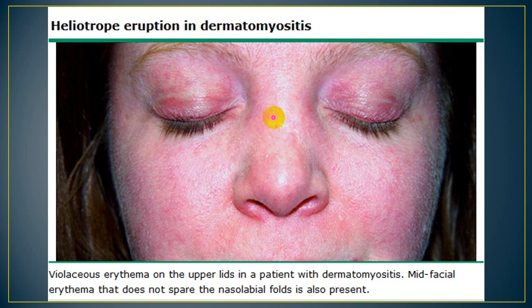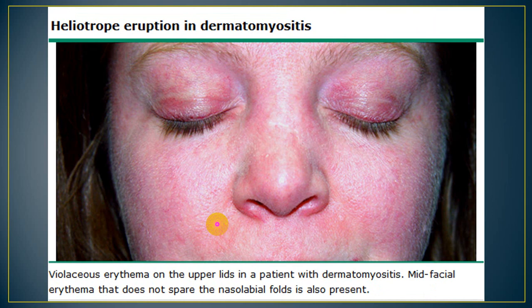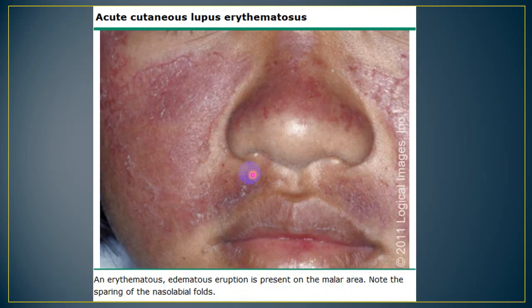The skin involvement occurs in structures surrounding the eye. Importantly, the bridge of the nose and cheeks are involved. How do we differentiate this from the malar rash of SLE? In malar rash of SLE, there is sparing of the nasolabial fold. While in patients with heliotrope rash, there is no skin sparing whatsoever. So if the involvement is generalized including the nasolabial fold, it is heliotrope rash; otherwise it is the malar rash of SLE.